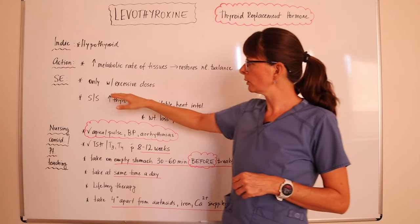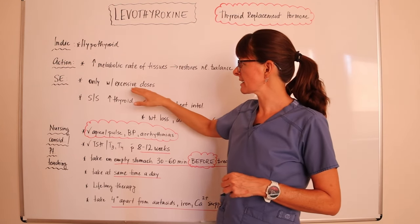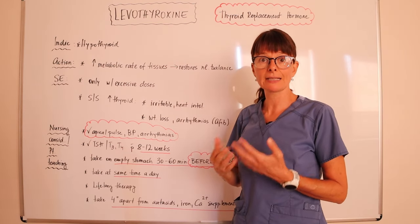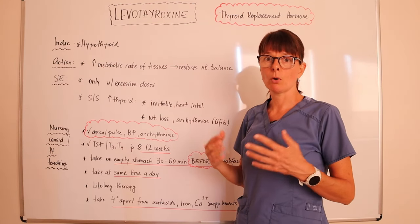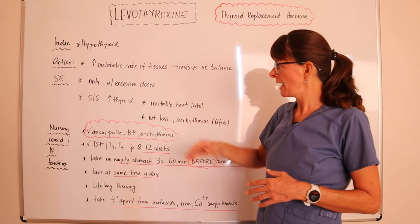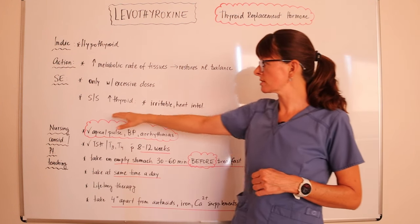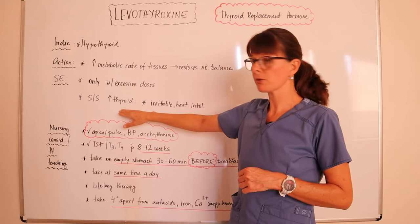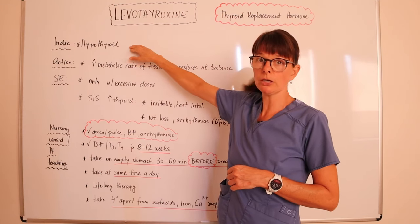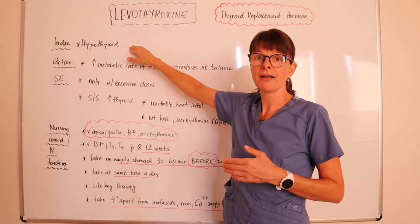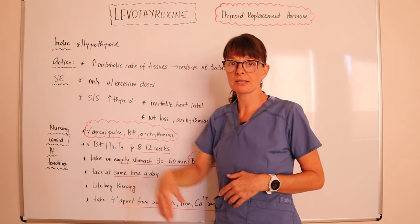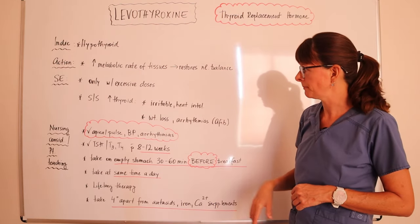Side effects only occur with excessive doses — that is, if the dose is too much, if the patient accidentally takes too much, or if an overdose should occur. Those side effects include signs and symptoms of hyperthyroidism, because now we've given the patient too much to treat their hypothyroidism and they're going towards the opposite end of the balance spectrum.